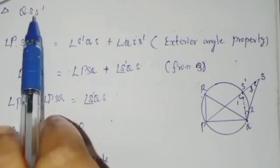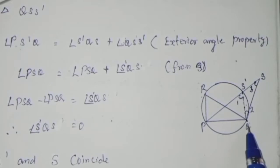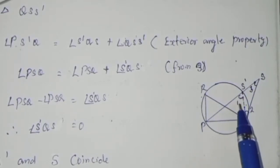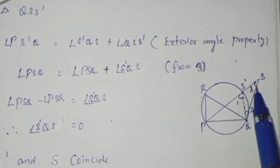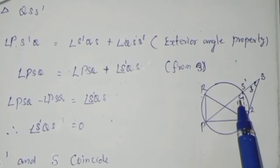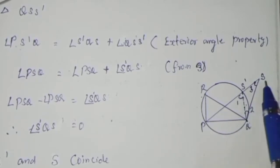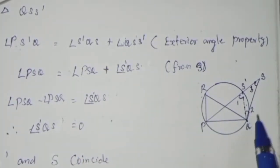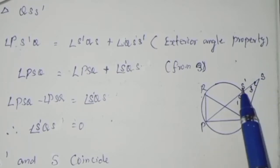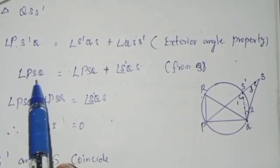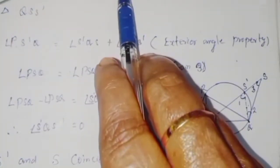In triangle QSS', angle PS'Q is an exterior angle. Angle PSQ and angle QSS' are the interior angles. So angle PS'Q equals angle PSQ plus angle QSS'. The third angle is QSS'. So angle PS'Q equals angle PSQ plus angle QSS'.